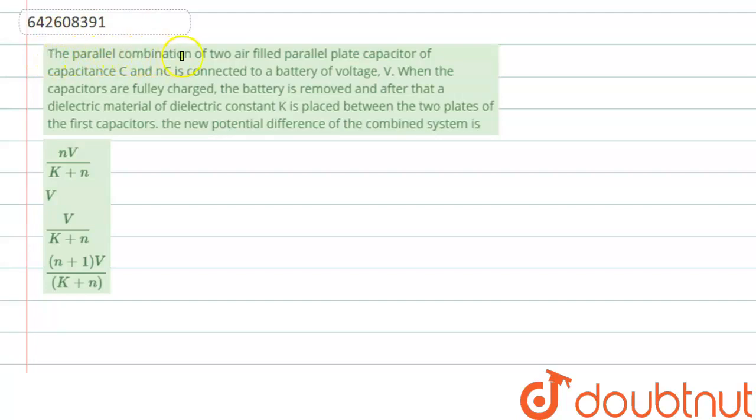The question says that the parallel combination of two air-filled parallel plate capacitors of capacitance C and nC is connected to a battery of voltage V. When the capacitors are fully charged, the battery is removed, and after that, a dielectric material of dielectric constant k is placed between the two plates of the first capacitor. The new potential difference of the combined system is...